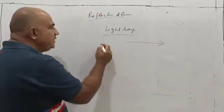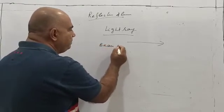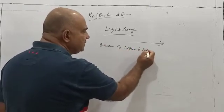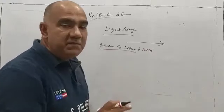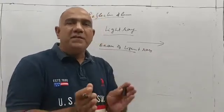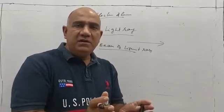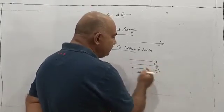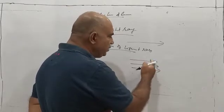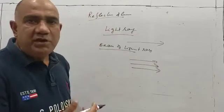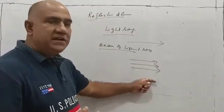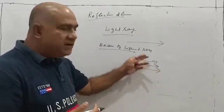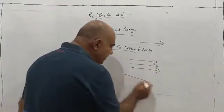Another term is beam of light. A beam of light is nothing but a group of rays taken together. When a large number of rays are taken together, that forms a beam. Now you will come across three types of beams. The first is a parallel beam of light — when the light rays are parallel to each other, originating from a source and moving in a particular direction.